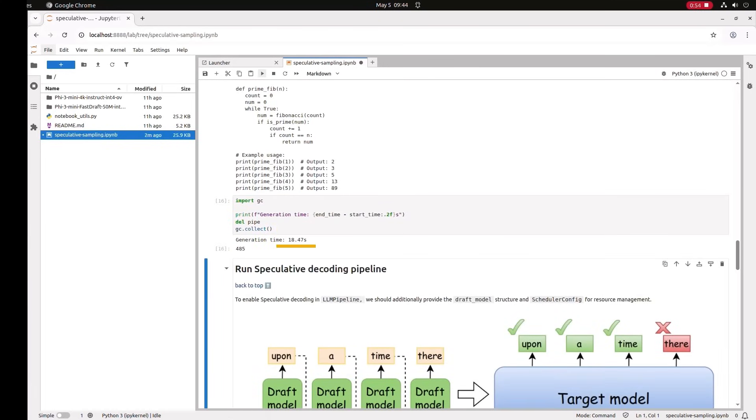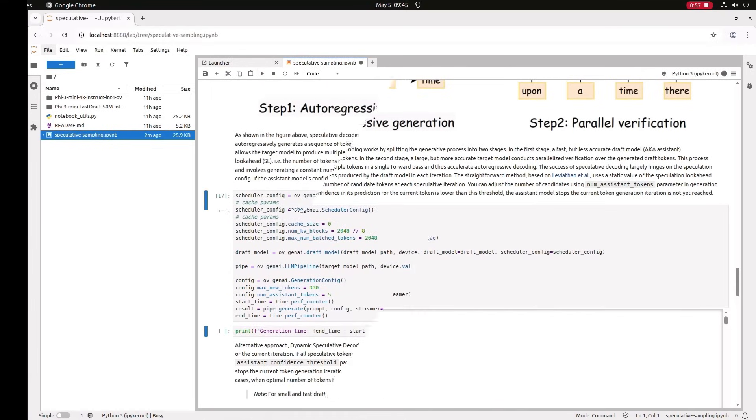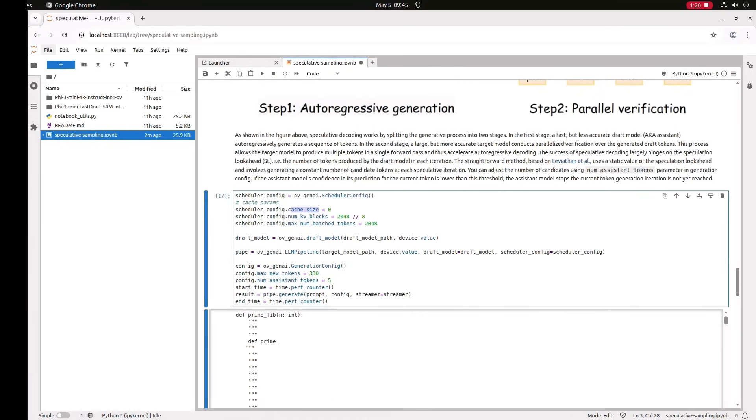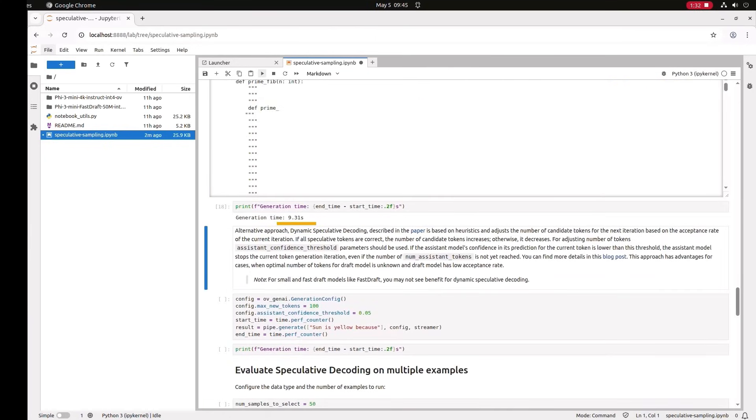And now we can run the speculative decoding. You can control all kinds of parameters here, like the caches, sizes, and more. Look for the article link below for the full explanation. And now the inference takes 9 seconds. Half the time.